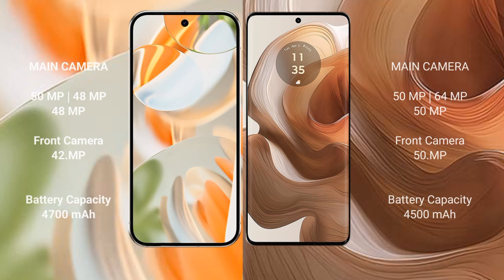The Google Pixel 9 Pro features a rear triple camera setup: 50MP, 48MP, and 48MP lenses. The Motorola Edge 50 Ultra also features a rear triple camera setup: 50MP, 64MP, and 50MP lenses. The Google Pixel 9 Pro supports 27W fast charging.